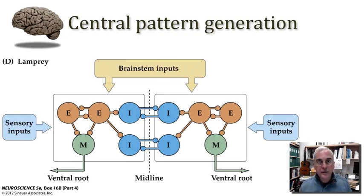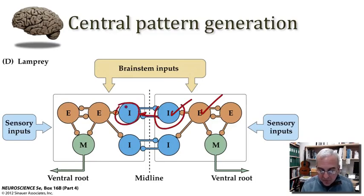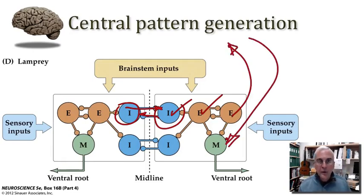Central pattern generators typically involve an interaction between excitatory neurons and inhibitory neurons. Some of these neurons are going to send connections that cross the midline, and this allows for the coordination of circuitry in one ventral horn with that of another. There will also be circuitry that spans the segmental levels, allowing for the interactions from one segment to another.